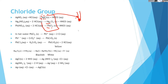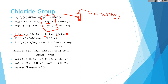We use the property that lead chloride is soluble in hot water. If you add hot water to the mixed chloride precipitate — the mixture of all chloride group precipitates — the lead chloride dissolves and dissociates, giving Pb²⁺ and Cl⁻ ions. So while it's hot, you have Pb²⁺ in solution.